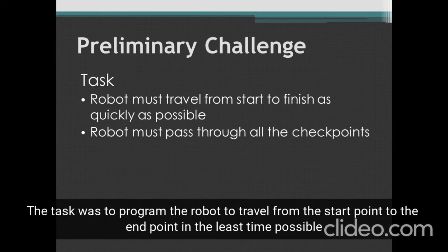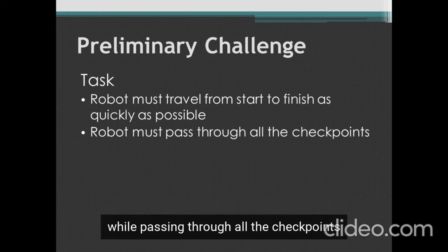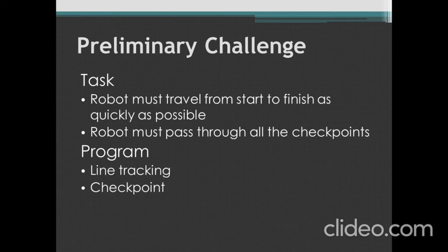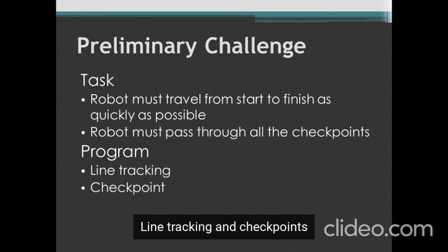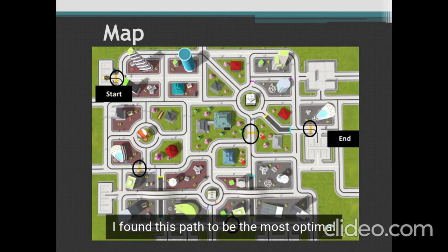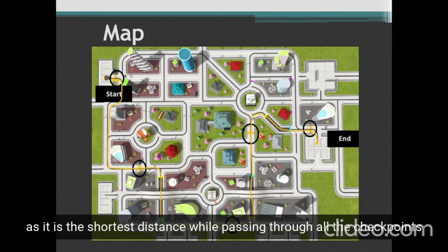The task was to program the robot to travel from the start point to the end point in the least time possible, while passing through all the checkpoints. This can be broken down into two basic program components: line tracking and checkpoints. This is the map, which has five checkpoints. I found this path to be the most optimal as it is the shortest distance for passing through all the checkpoints.